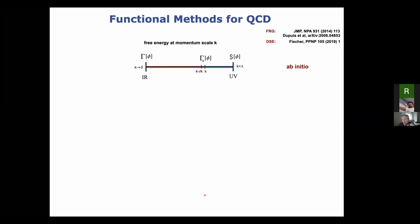Christian has already given a very nice introduction to Dyson-Schwinger equations. I will now introduce another functional method, which is related but not the same — the functional renormalization group. There, instead of looking at the quantum equation of motion of the theory, we look at a coarse-grained theory. We introduce an infrared cutoff scale, usually called K, to our generating functional, which you can interpret as the free energy in the presence of arbitrary background fields.